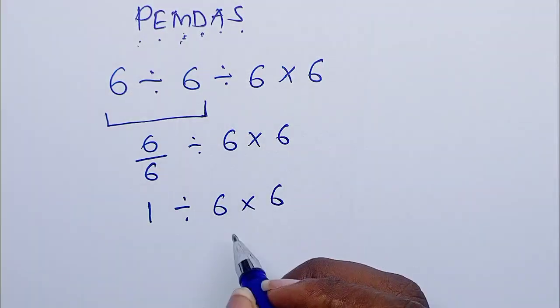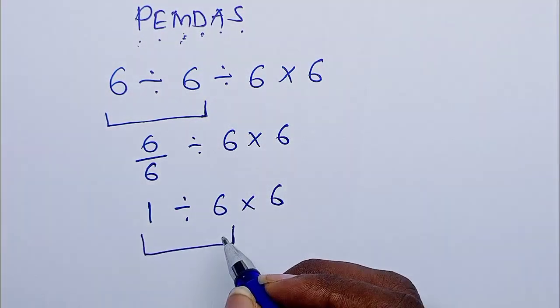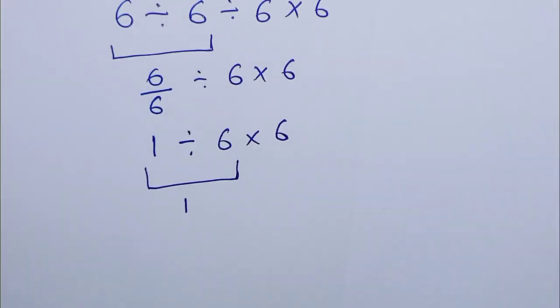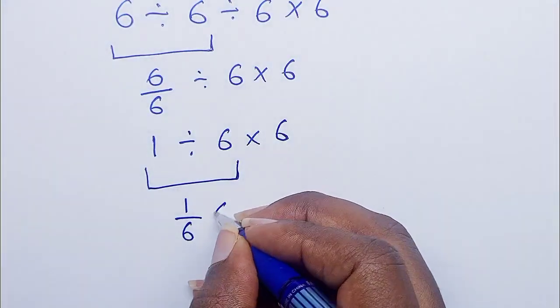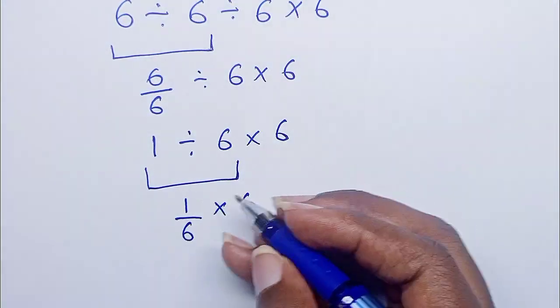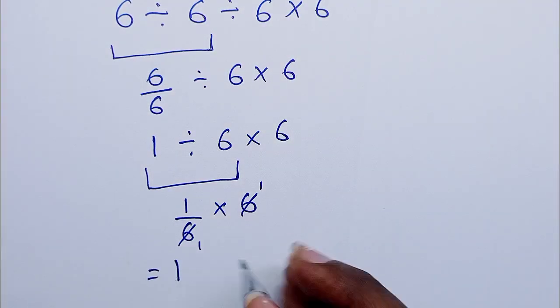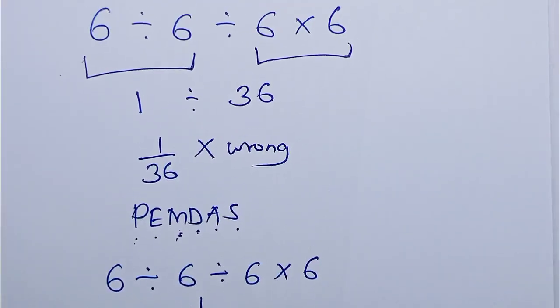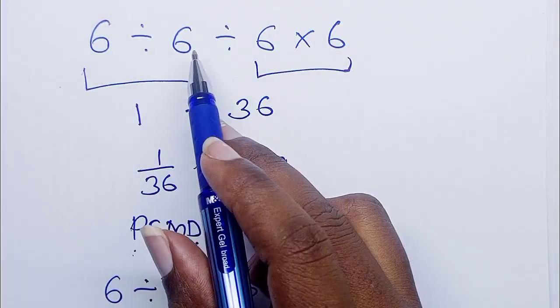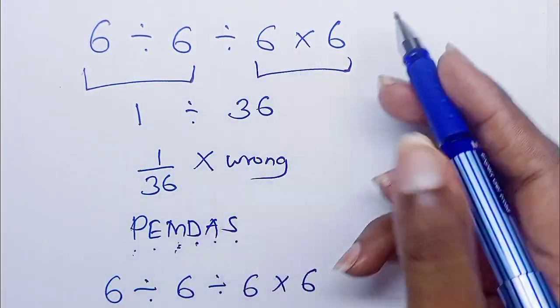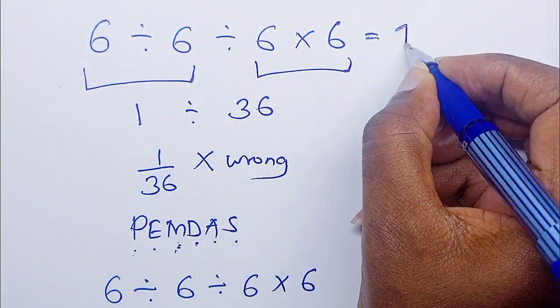So division again is coming first. You work it out first. So 1 over 6, then times 6. This 6 cancels with this 6 to give us 1. So our true or correct answer for this expression, 6 divided by 6 divided by 6 times 6 is 1.